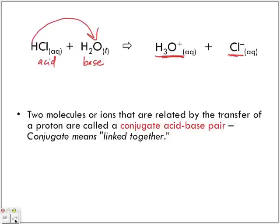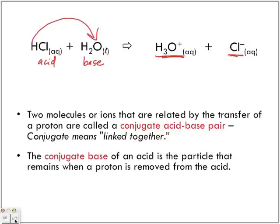Two molecules or ions that are related by the transfer of protons are called conjugate acid-base pairs. So conjugate, meaning they're linked together.